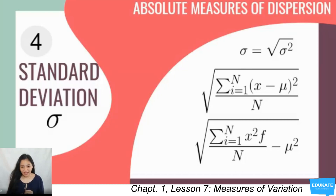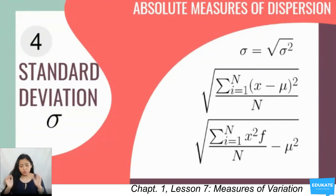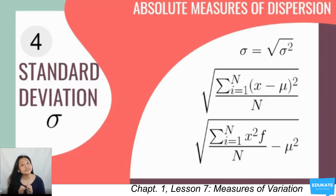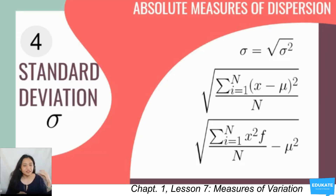Standard deviation is symbolized as sigma. It is the square root of the variance. If the variance is 93.39, the standard deviation is the square root of 93.39, which is approximately 9.66. To interpret: on the average, the scores of the students deviate from the mean score of 32 points by approximately 10 points — meaning each score deviates from the mean of 32 by about 10 points, so values range around 22, 12, 42, 52, and so on.